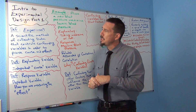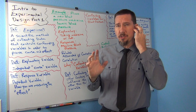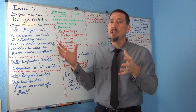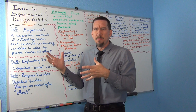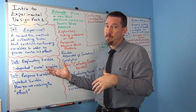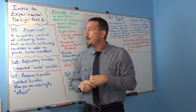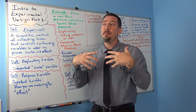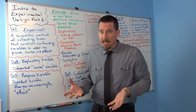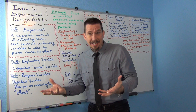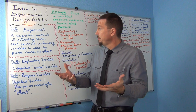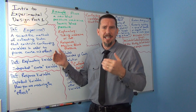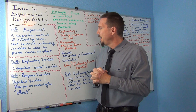One of the key things with experiments is you want to associate it with proving that one thing causes another. A lot of times people don't use experimental design — you can just collect data without trying to control confounding variables. We're going to get into what controlling confounding variables means, and this whole idea of cause and effect.